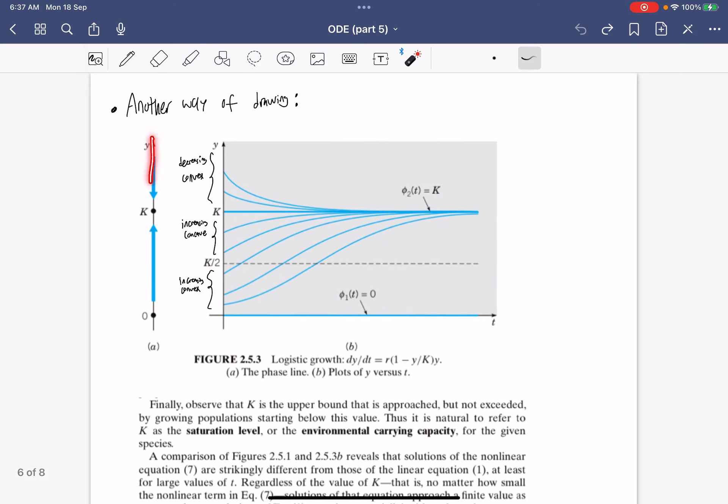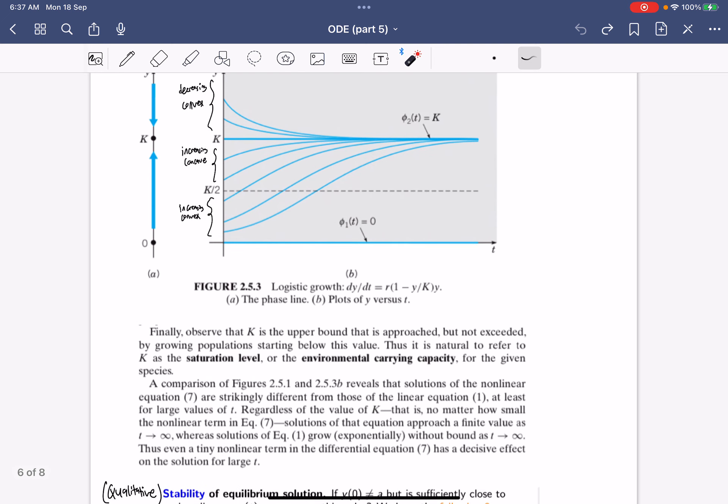Another way of drawing it is you have the phase line beside here and then you just draw the arrows this way instead of drawing two separate or an entire graph. What we can see is that K becomes an upper bound never exceeded as the population starts growing, and this K we call the carrying capacity of the environment.